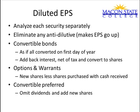For diluted earnings per share, you would analyze each security separately. And if any of them make earnings per share go up when you do them individually, you would leave that security off — ignore that security in the calculation. The three classic dilutive securities are convertible bonds, options or warrants, and convertible preferred.